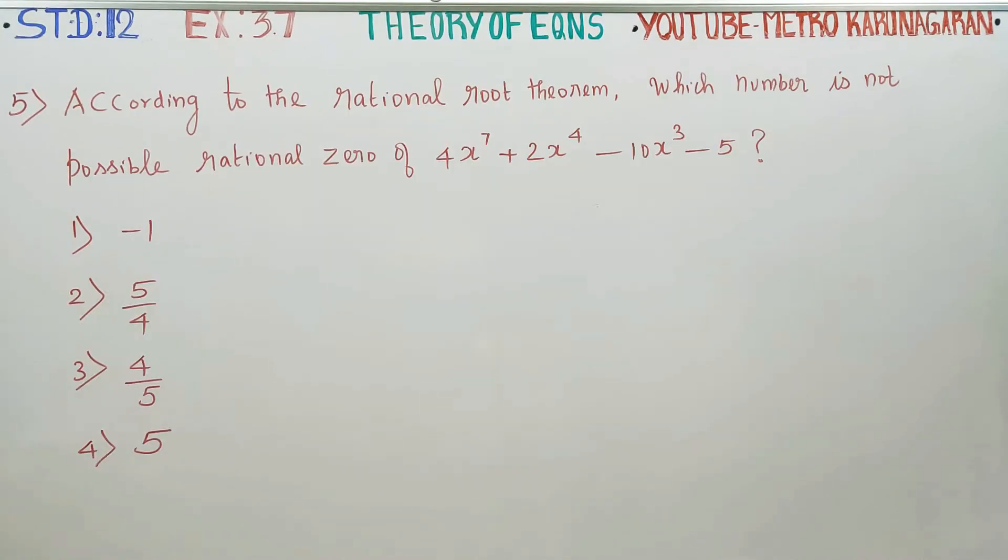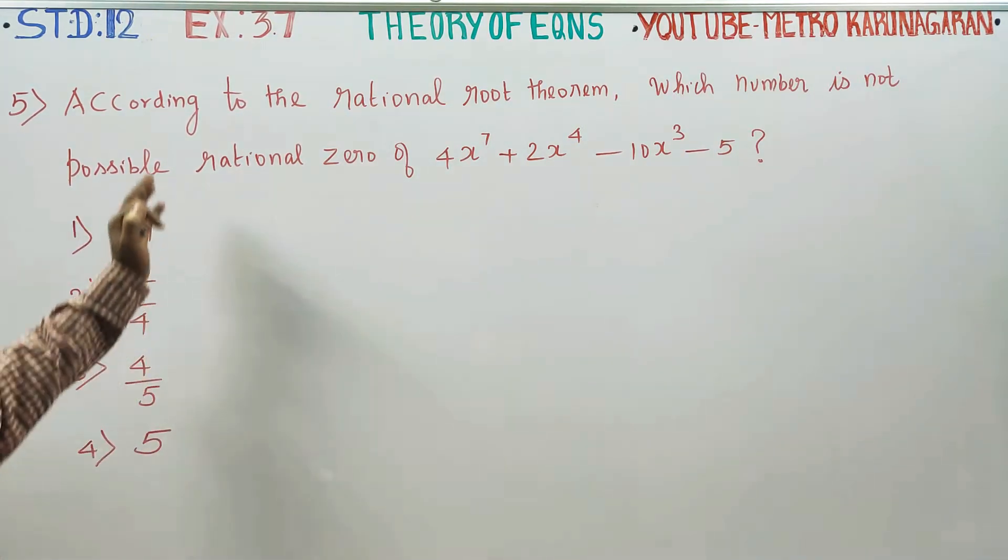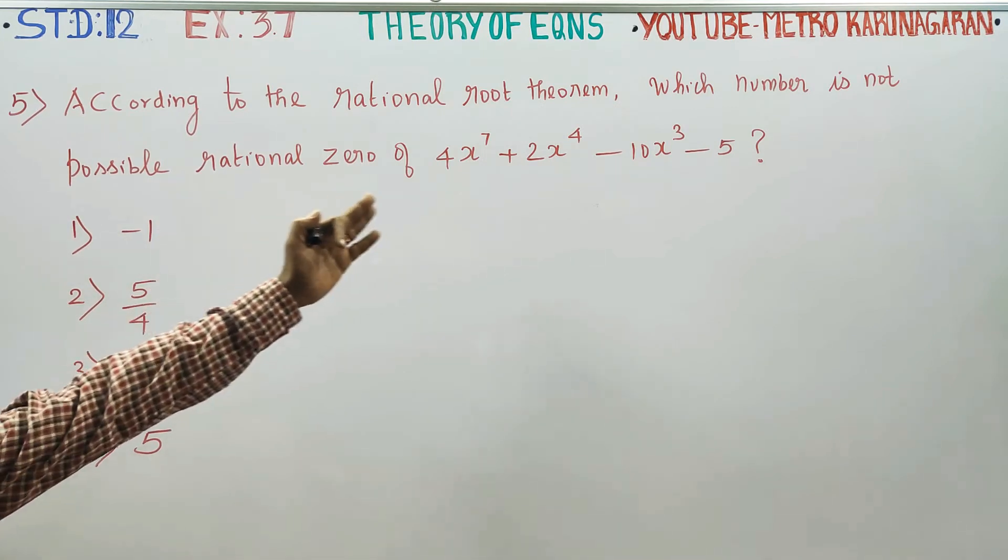Dear 12th standard students, in exercise number 3.7, problem number 5, according to the Rational Root Theorem, which number is a possible rational zero of this polynomial?